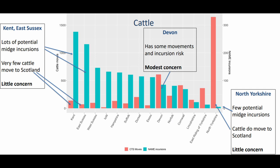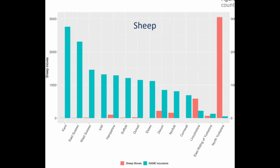What we would be very alarmed by would be one of those counties with a large turquoise bar also having a large number of animals moving to Scotland. That's not the case with cattle, but we would be a bit concerned about Devon. Likewise for sheep, there are similarly even fewer animals coming from those higher risk counties in terms of sheep movements.